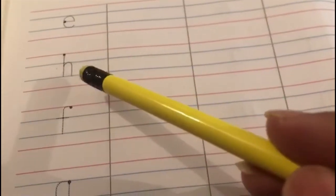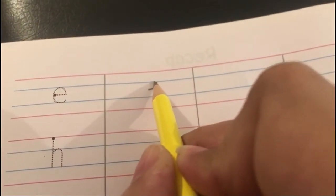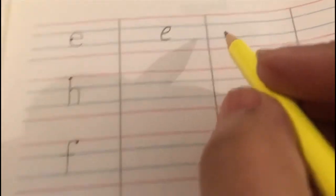Now children, moving to page number 54. On this page the letters are e, h, f, g, and i. So come on, let's begin. First let's write e, so e says 'e'. H says 'h', f says 'f', g says 'g', and i says 'i'. This way children.